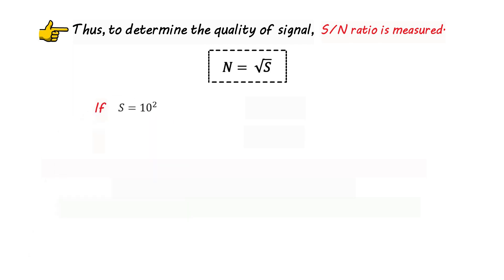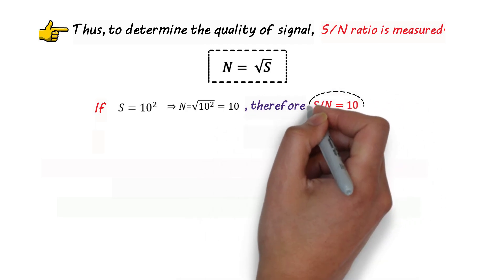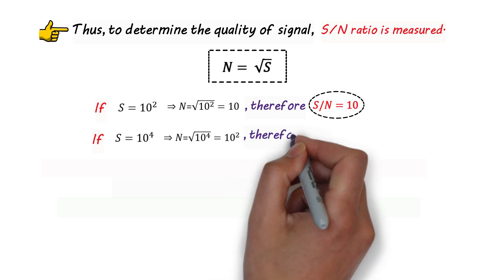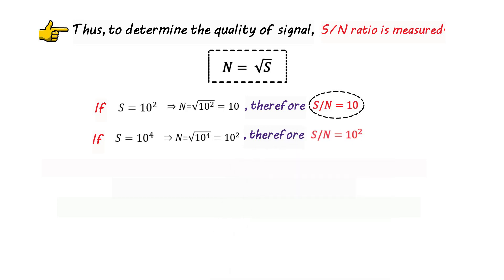But if the signal is equal to 10⁴ units, noise comes out to be 10² units, therefore signal to noise ratio will be 10².